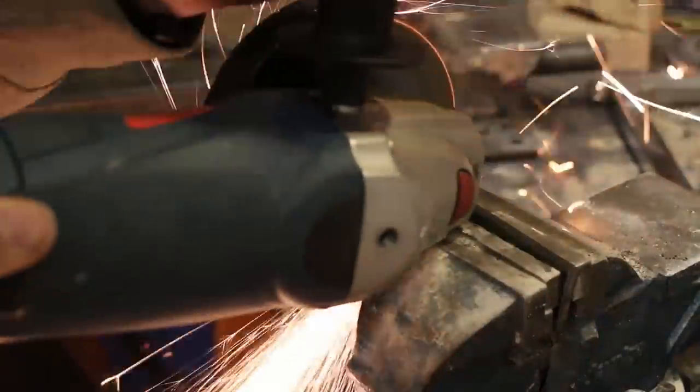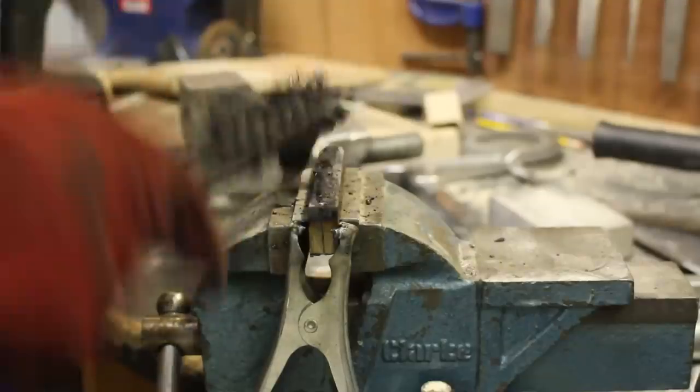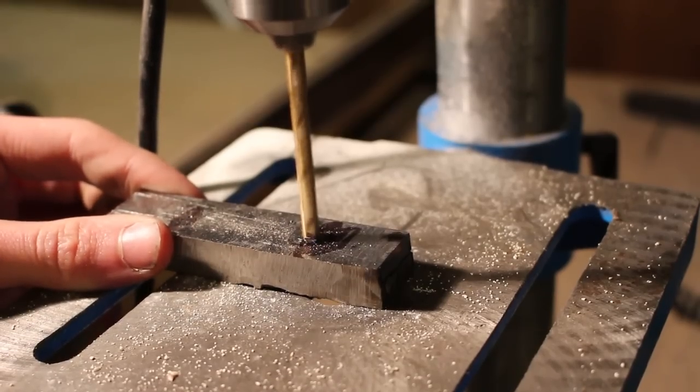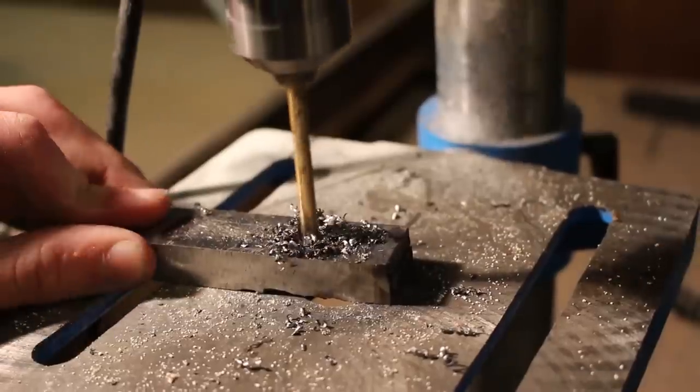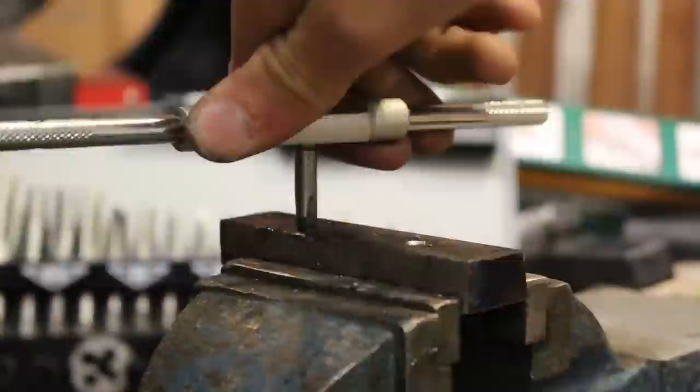I welded two pieces of flat bar together and then ground off the weld beads to form one solid rectangle of metal. I then drilled two holes straight through the middle. Using a thread tap and tapping wrench, I tapped these holes for an M6 thread.